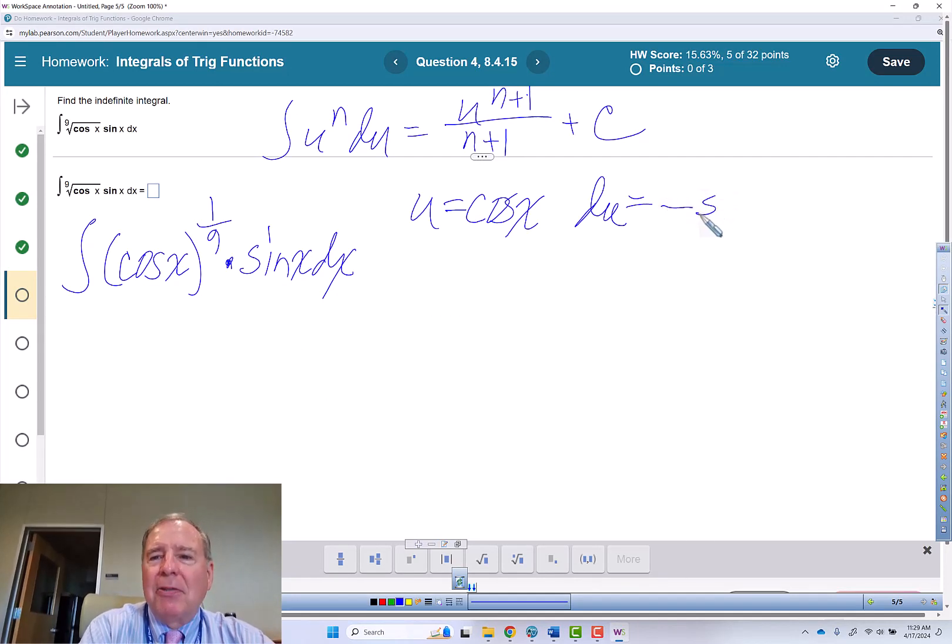So that's negative sine of x is the derivative, then, times dx. So we've almost got du here.